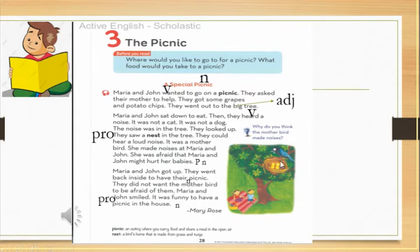Yes, it's a bird. It's a mother bird and two babies of bird, two babies of bird in a nest. What's the meaning of nest? Yes, nest - gosh. Now Maria and Joan wanted to go on a picnic. They asked their mother to help. They got some grapes and potato chips. They went out to the big tree.